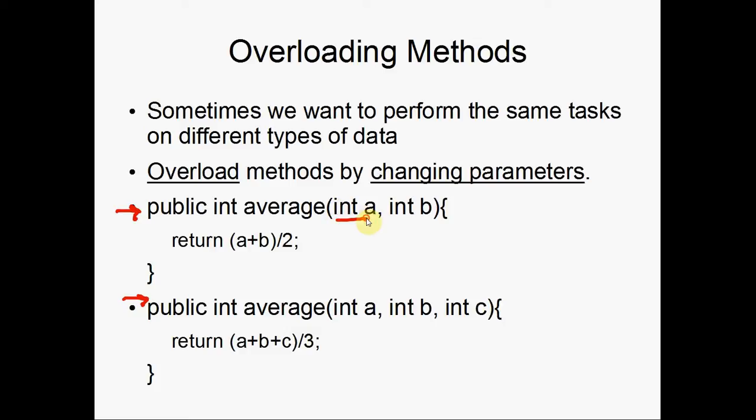As you can see here, we're passing in two integers in the first method, and three integers in the second method. Even though they're both performing the average, in the first example, the average is computed for the two numbers, and in the second example, the average is computed for three numbers. The compiler is going to choose which average method to use, based off of the parameters being passed in when the method is called.